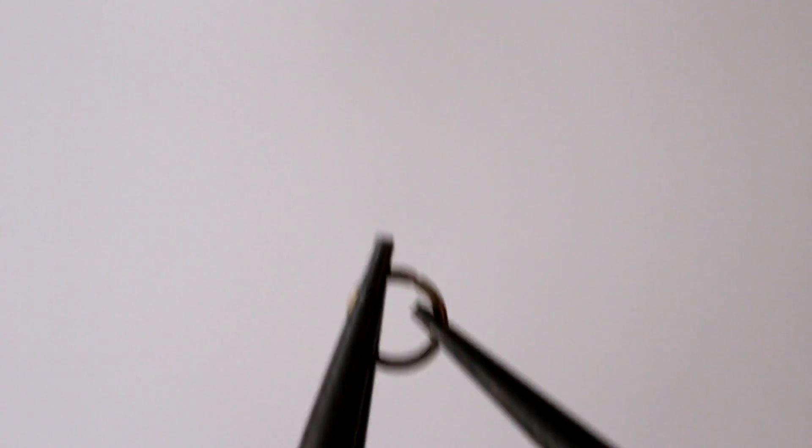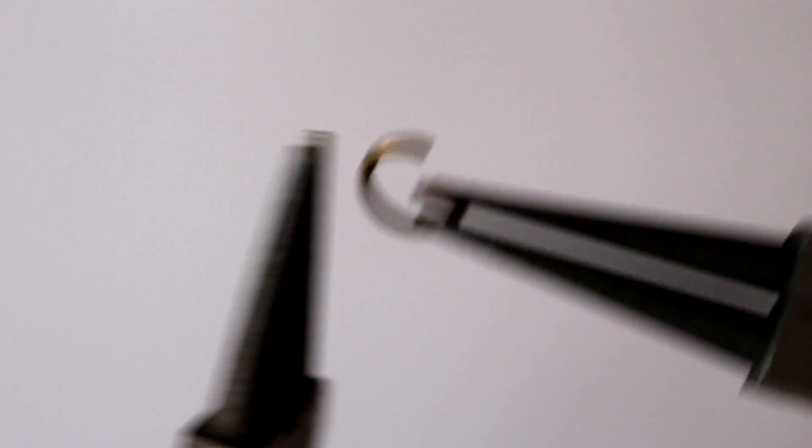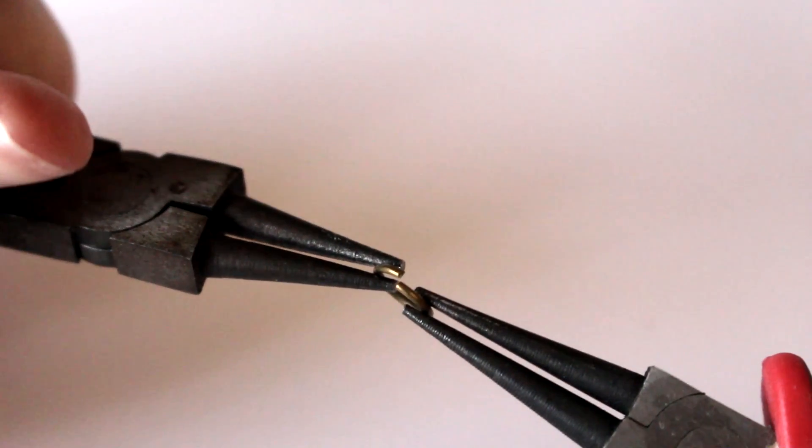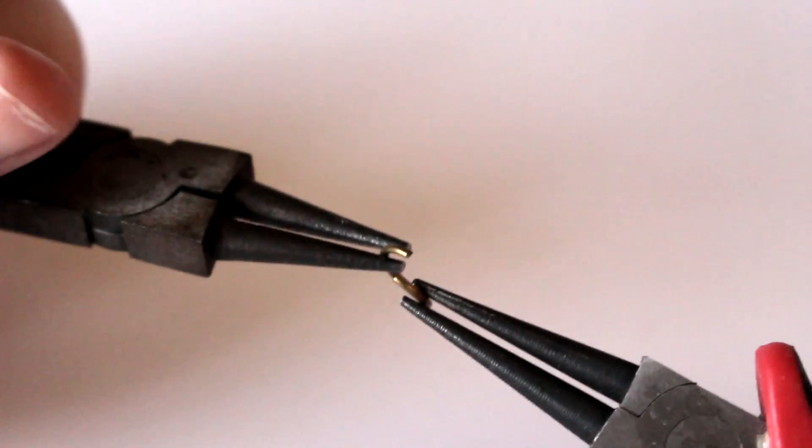There's got to be a better way. And there is. Instead of pulling the loop open, twist it open. You're basically pulling toward yourself with one set of pliers and pushing away from yourself with the other. See how that works?